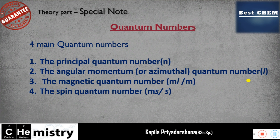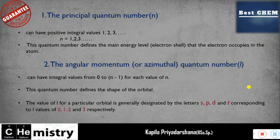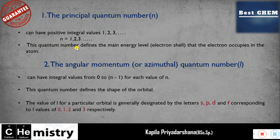Now let's move to the first quantum number — the principal quantum number n. It can have positive integral values: 1, 2, 3, etc. This quantum number defines the main energy level, or electron shell, that the electron occupies in the atom. These are the two main points you should know under the principal quantum number n.